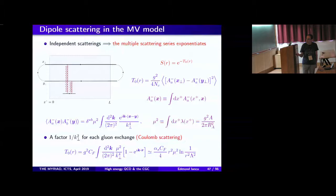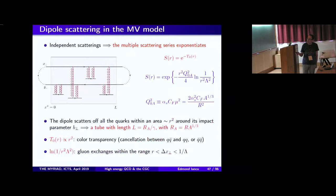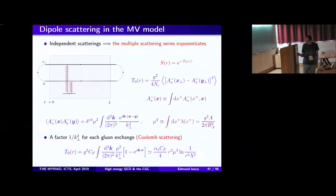This integration over k-perp is quadratically divergent as k-perp goes to zero. However, when computing the scattering amplitude, we have two types of terms: terms where both the quark and anti-quark scatter, and terms where only one scatters. There is a compensation between these two types, making the overall scattering amplitude only logarithmically divergent. Expanding the square, terms like A(x) squared give a constant, while terms like A(x)·A(y) depend on x minus y, i.e., the dipole size r.